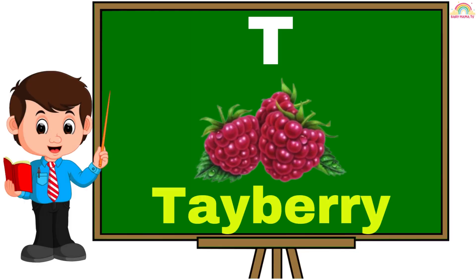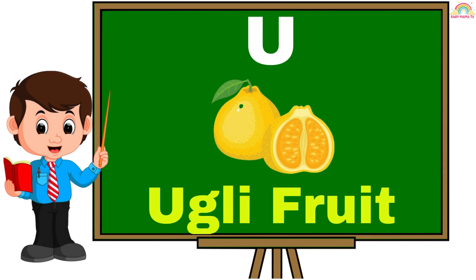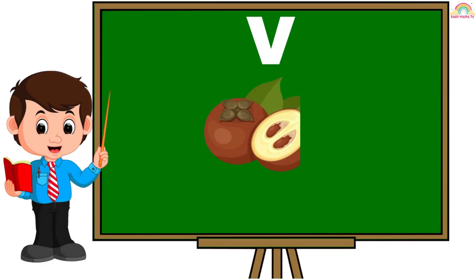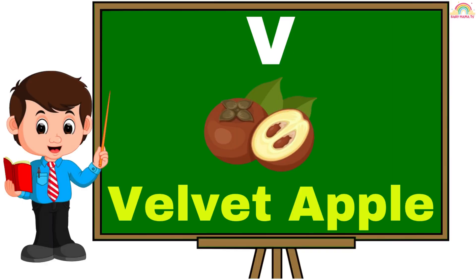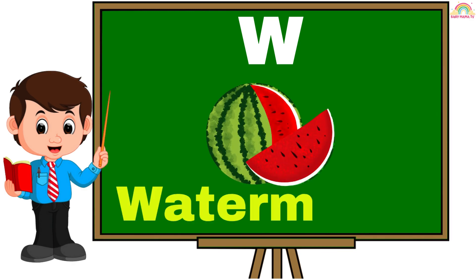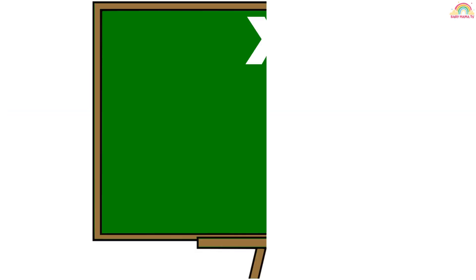T. T for tayberry. U. U for ugli fruit. V. V for velvet apple. W. W for watermelon.